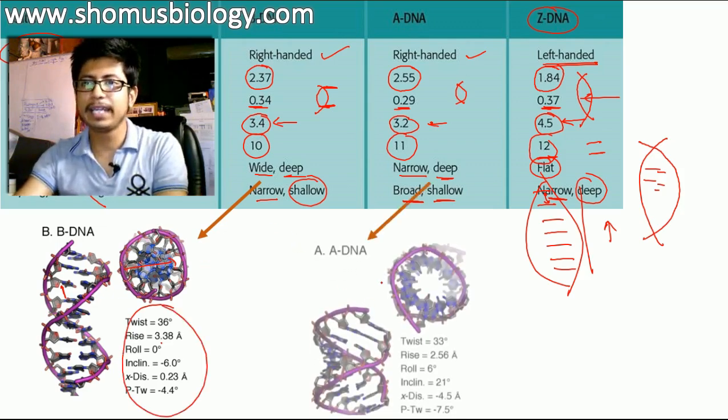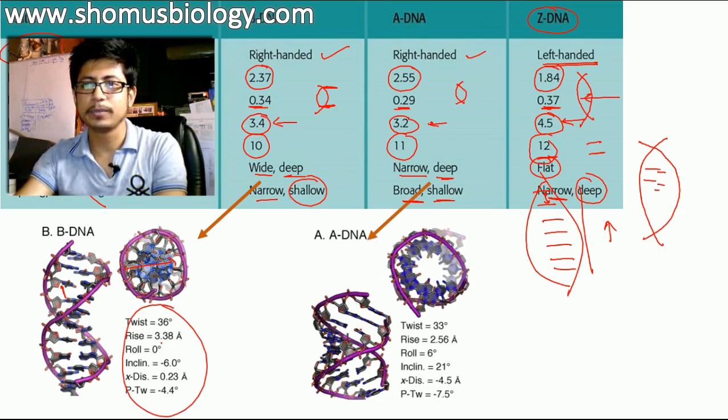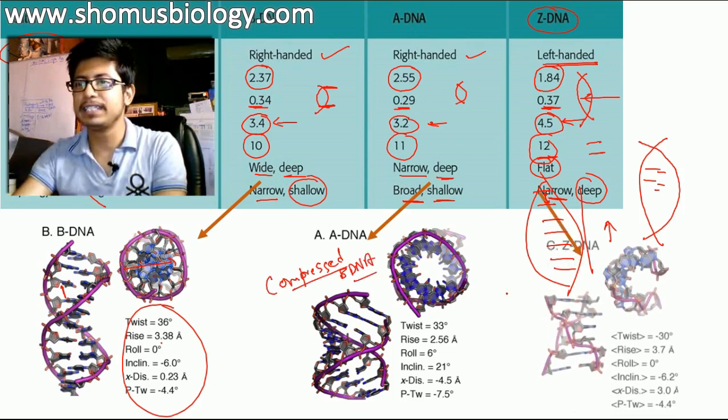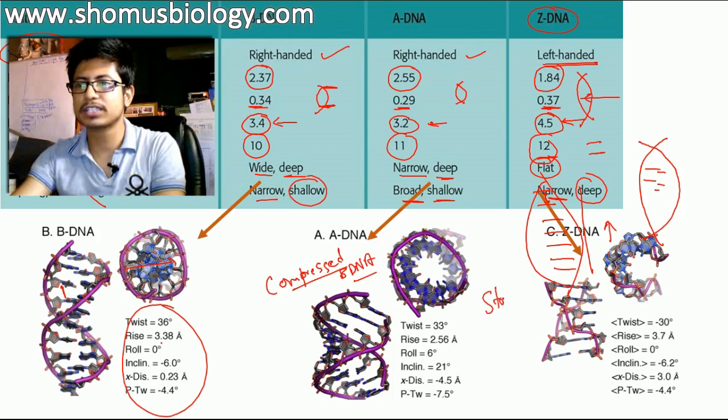For the A DNA, you will see something like that, which is kind of a compressed form there. So, A DNA is kind of a compressed format of the B DNA. You can simply tell that.